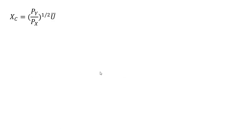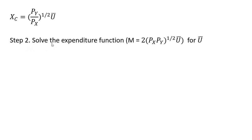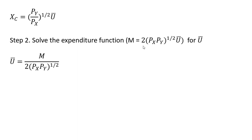Moving on — rewriting the compensated demand for good x. Step 2 is we're going to solve the expenditure function for the given level of utility. Rewriting it here, we're going to solve for ū. So just dividing through this term, we get this result.